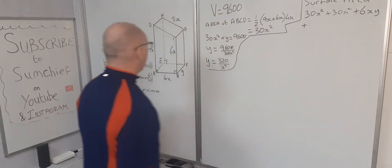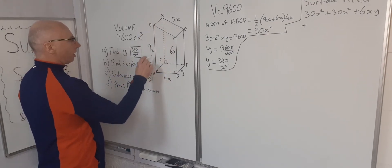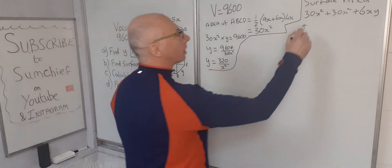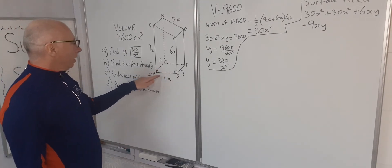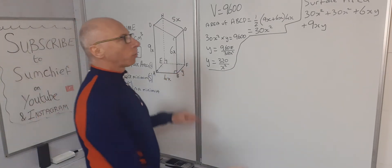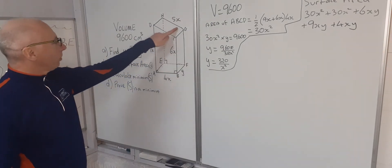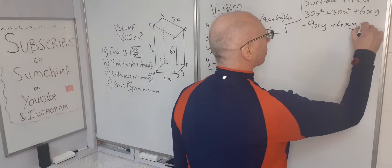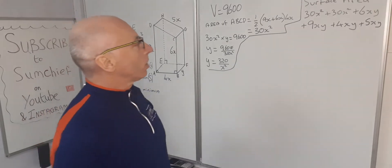Face AEHD has dimensions 9x and y, so that's 9xy. The base has dimensions 4x and y, so that's 4xy. The top face has dimensions 5x and y, so that's plus 5xy. Adding all these up to get the total surface area S.